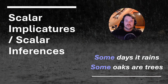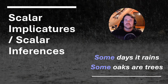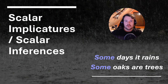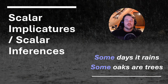When someone tells you that some oaks are trees, you might confront them and say: 'Hey, that's not completely right — aren't all oaks trees?' But that is exactly where the interesting part of this phenomenon of scalar implicatures comes into play. The second sentence is the one we're really interested in. 'Some oaks are trees' — and that's called an under-informative sentence.